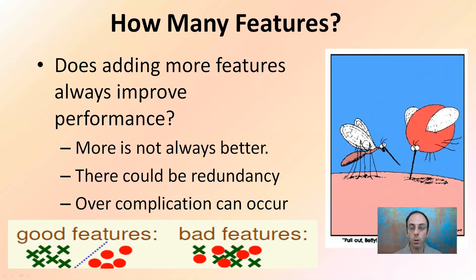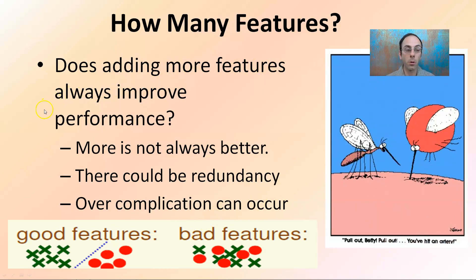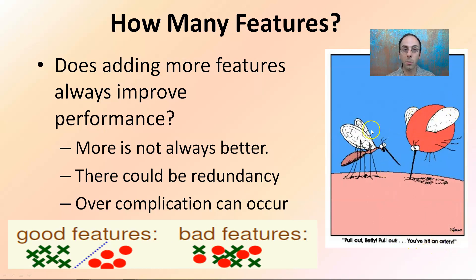How many features do we include? Does adding more features always improve performance? More is not always better — redundancy or overcomplication can occur. There's a little Far Side Gary Larson cartoon about pulling out — it's hitting an artery, getting too much blood. There's a certain point where there's an ideal amount, but if you go over and above, you can actually cause a negative effect or get less useful data.